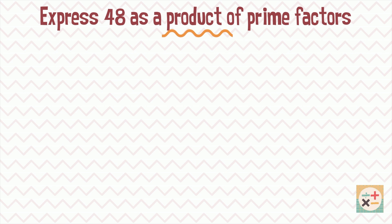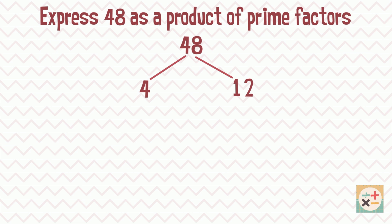Firstly, at the top of the tree we write the number — in this case, 48. Then we create two branches and split the number into two of its factors. Here we have chosen 4 and 12, as when we multiply these together we get 48.